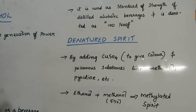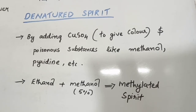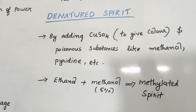Denatured spirit: Alcohol used for industrial purposes can be made unfit for drinking by adding poisonous substances like methanol, pyridine, or copper sulfate solution. This process is known as denaturation of alcohols, and the spirit obtained after this process is known as denatured spirit.